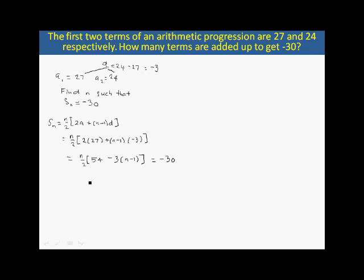Solving this, multiplying by 2, we get n(54 - 3n + 3) equals minus 60.